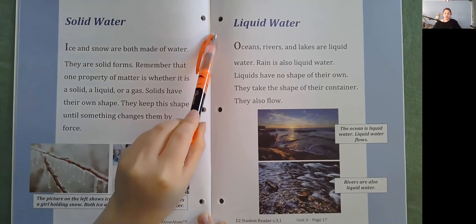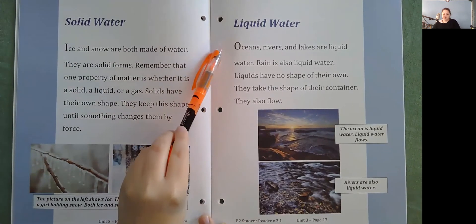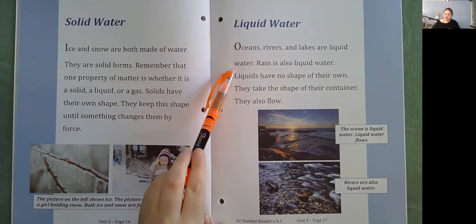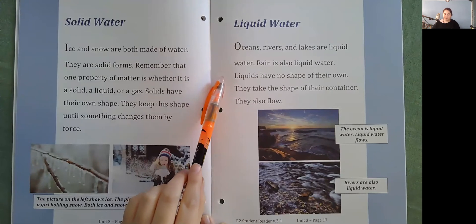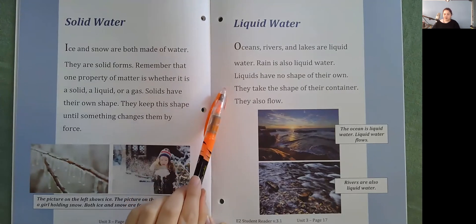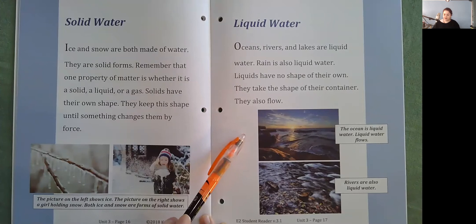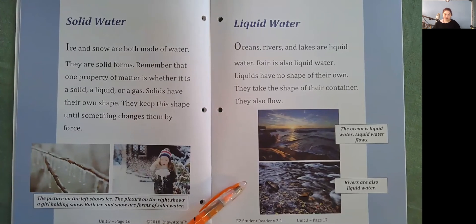Liquid water. Oceans, rivers, and lakes are liquid water. Rain is also liquid water. Liquids have no shape of their own. They take the shape of their container. They also flow. The ocean is liquid water. Liquid water flows. Rivers are also liquid water.